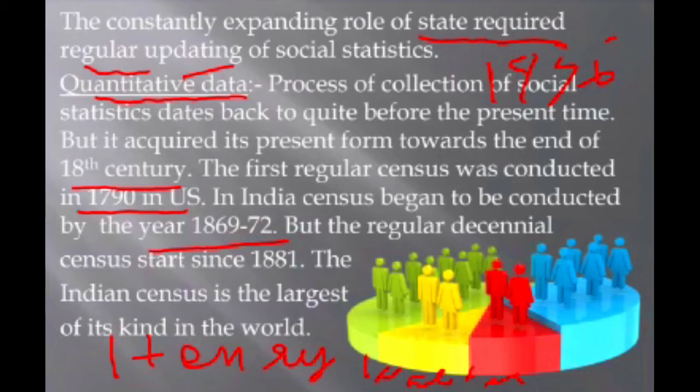When did the regular decennial census start? The census conducted every 10 years started from 1881, and this is also very important to remember.